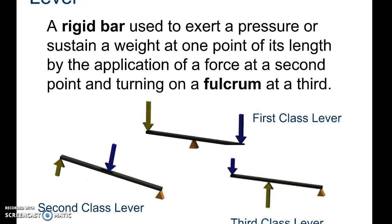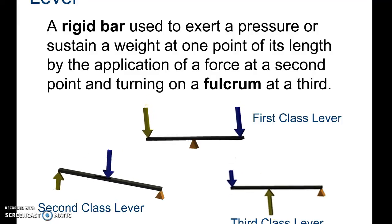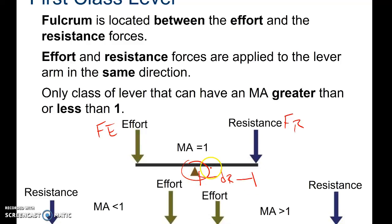There are three different types of levers: first class, second class, and third class. On a first class lever, your force resistance and your force effort are on opposite ends, and your fulcrum is in the middle. The distance resistance is always measured from the fulcrum to the resistance force, and the distance effort is always measured from the fulcrum to the effort force.